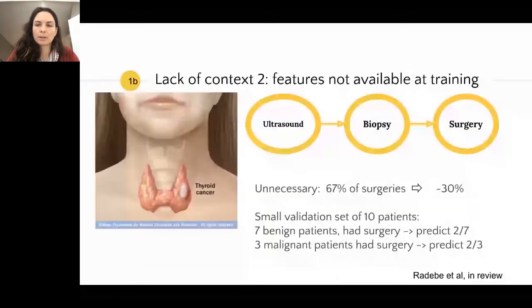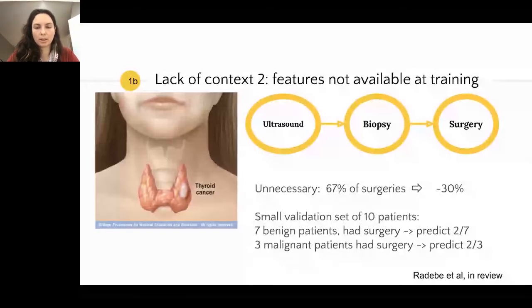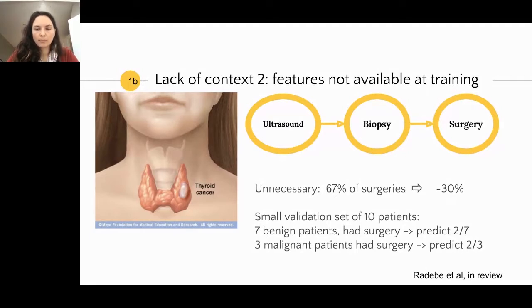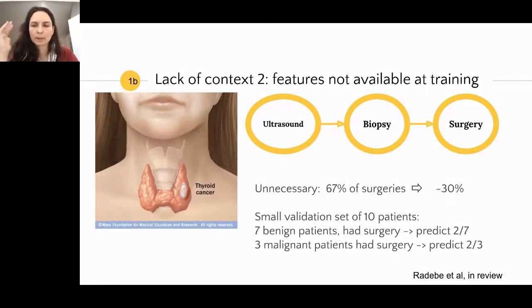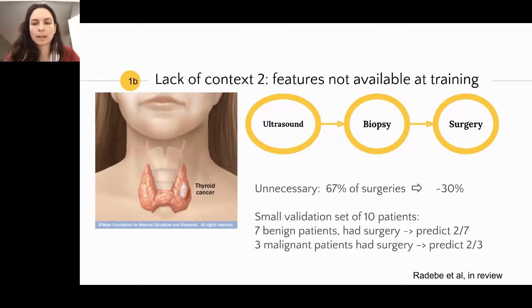Another example is from our thyroid cancer work. We had a small validation set of 10 patients collected after the model was trained. Seven benign patients had surgery; we predicted only two needed surgery. When we went back to the clinician, they said one patient had a very different medical history and strange family history — they just did it to be safe. That history was not part of the features given to the system, so there was no way to take it into account. We have to be mindful that AI will make errors because the information it receives is incomplete.